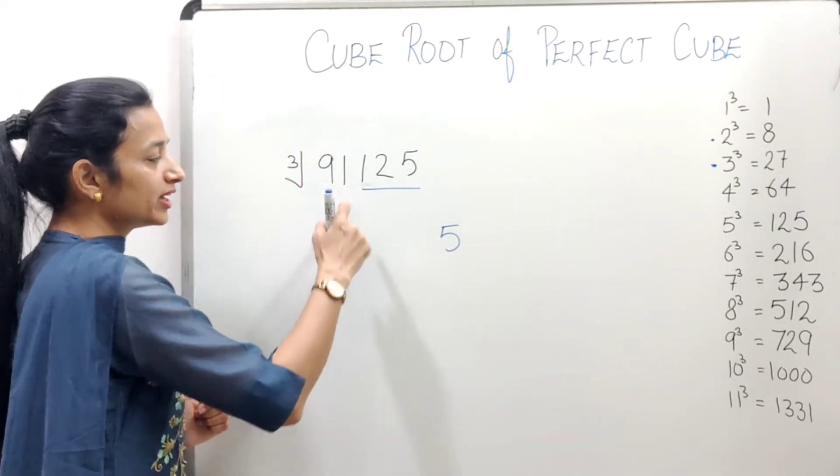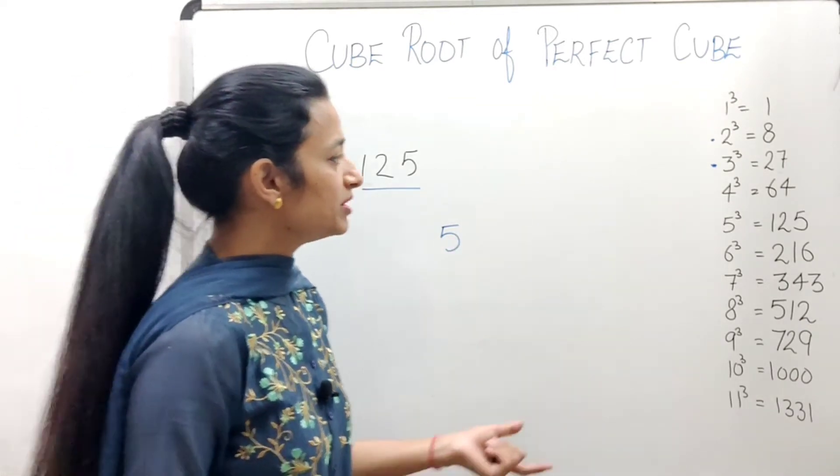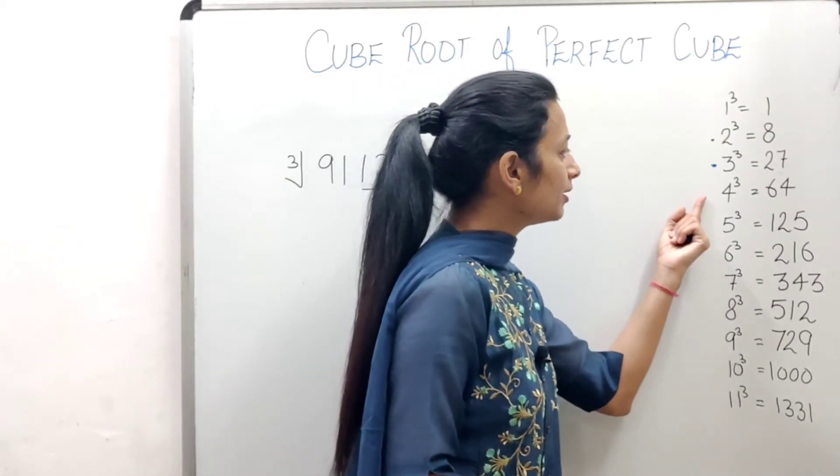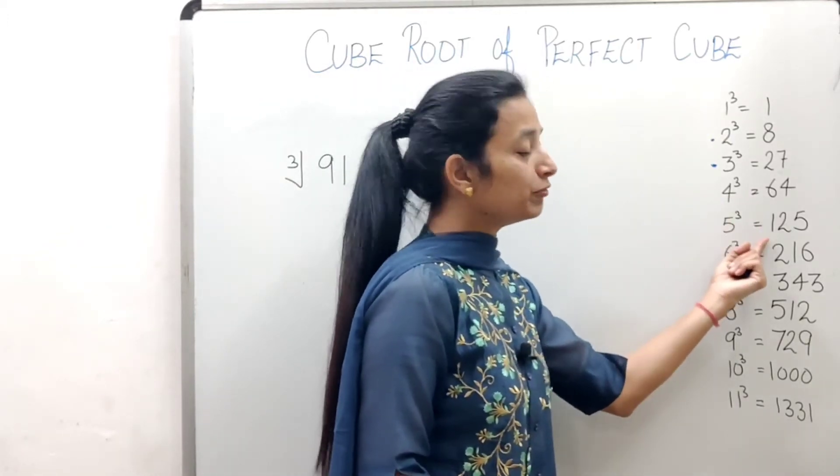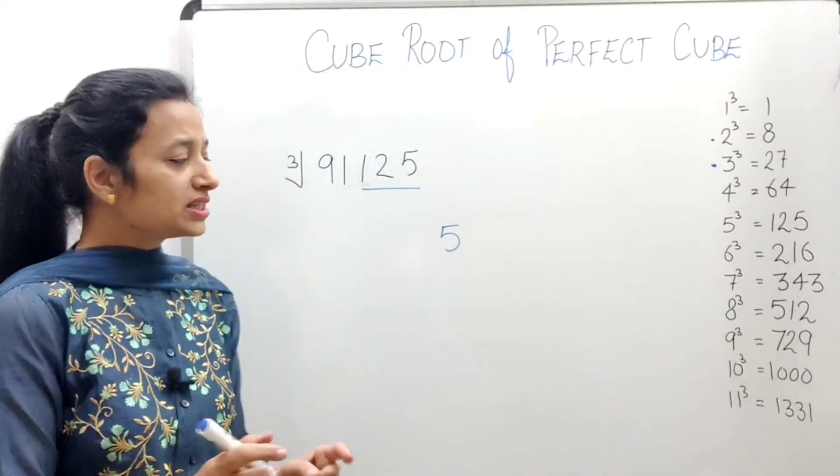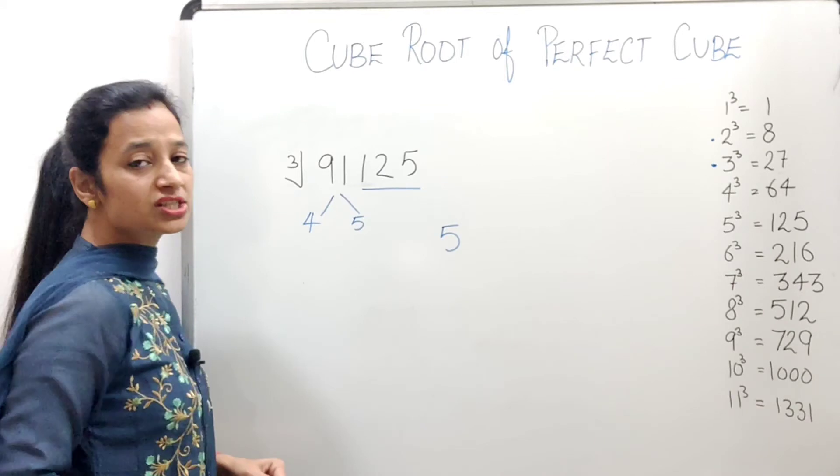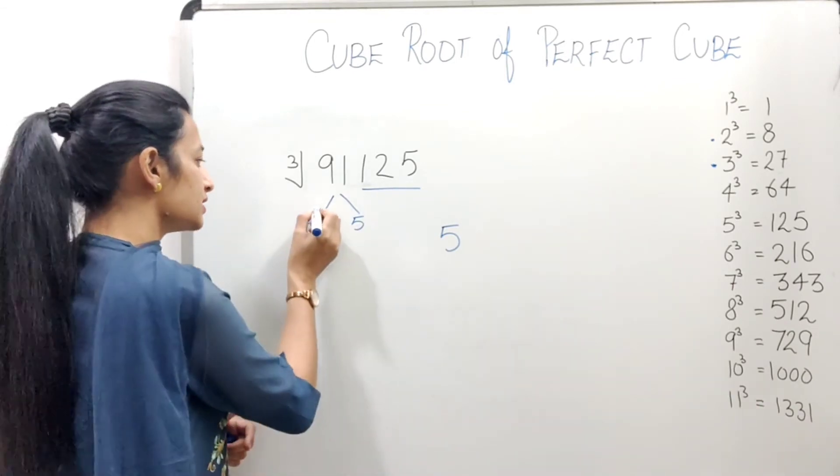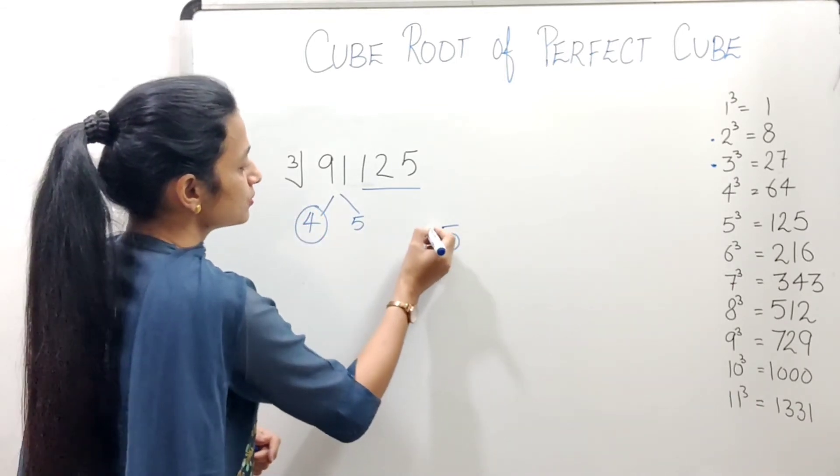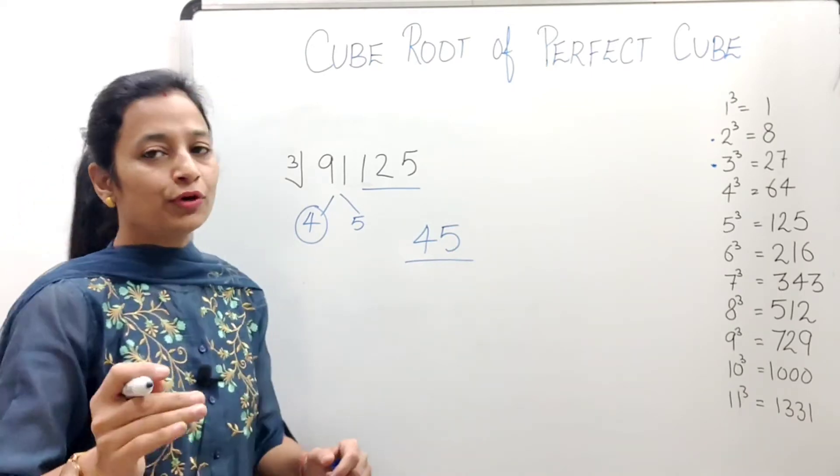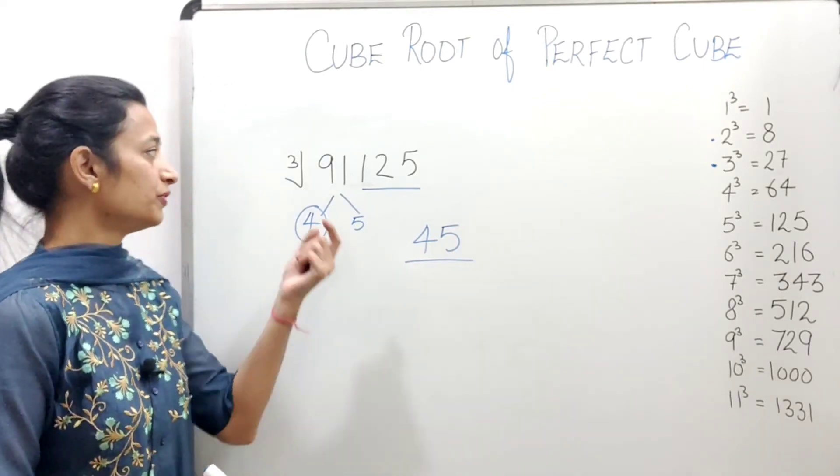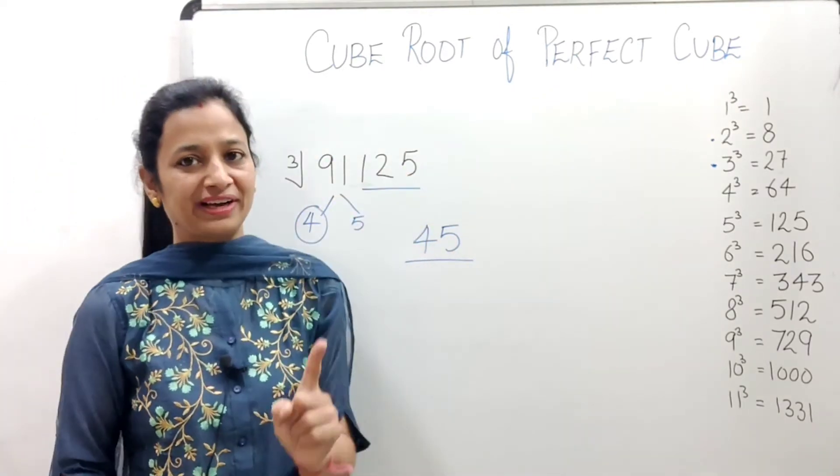And now, we will look at 91. So 91 comes between whose cubes? 91 will be between 64 and 125, means between 4 and 5's cubes. And from here, what do we have to do? Take the smaller number. So 4. That means 45 is the cube root of 91125.